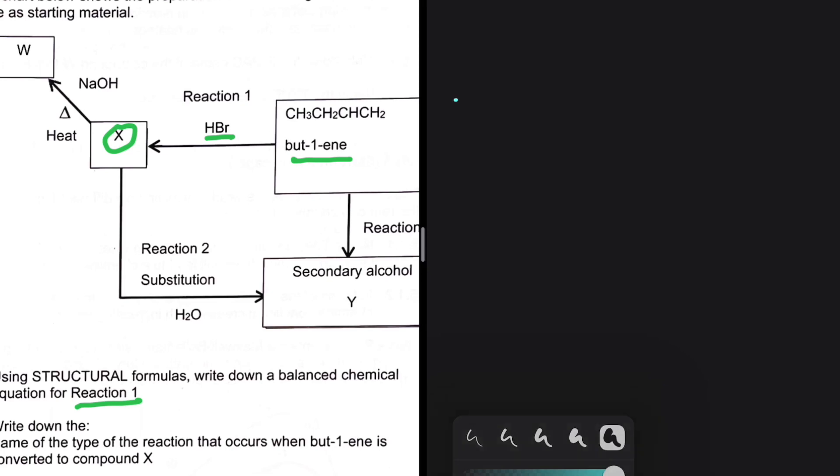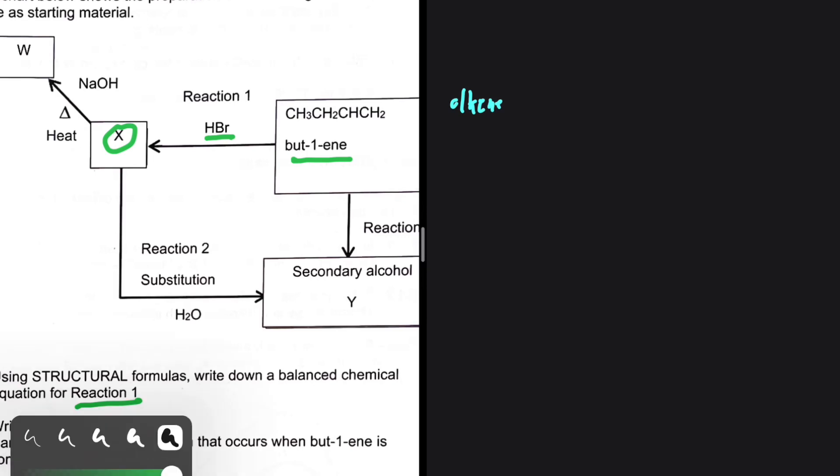Without looking at anything else, if it starts with an alkene, it is an addition reaction. No questions asked. What are we adding in this reaction? We are adding a hydrogen and a halogen. Let's start and see what we are going to have.